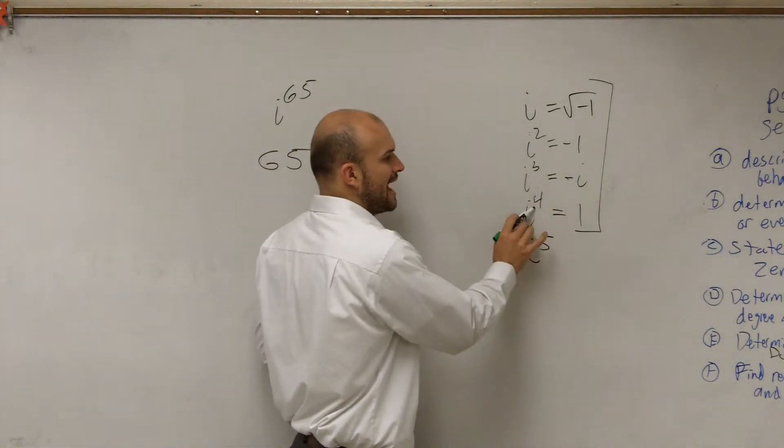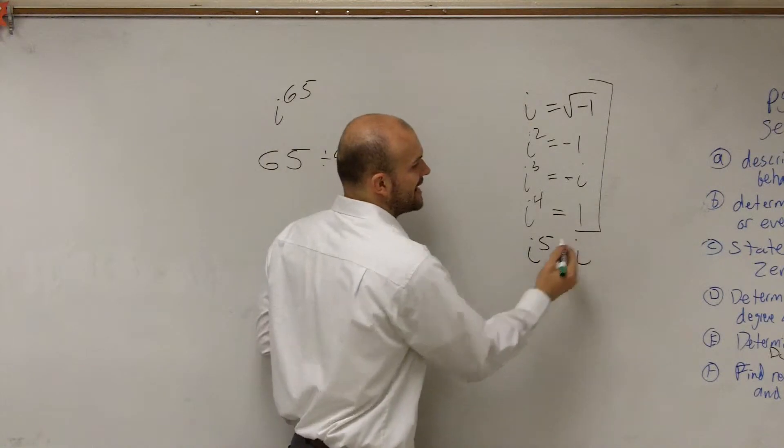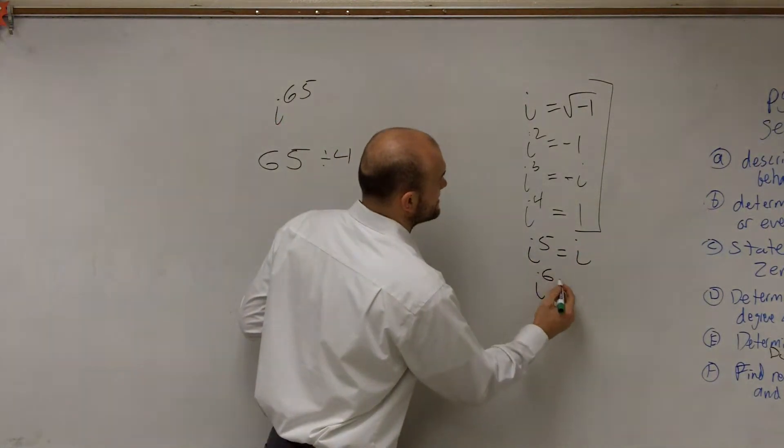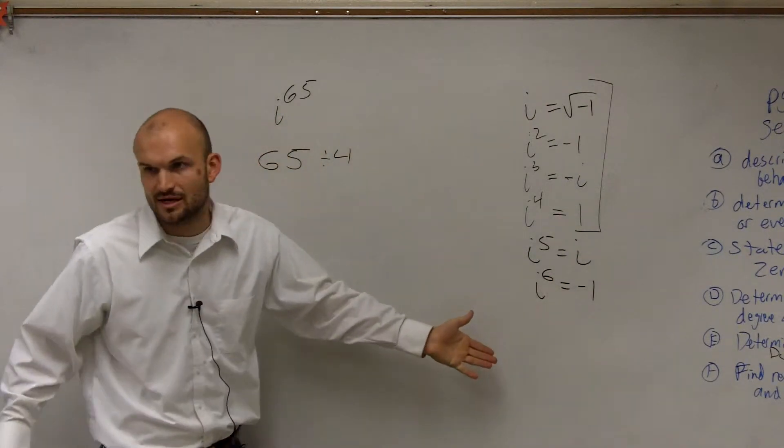Because i to the fifth, if you multiply i on both sides again, you're getting i to the fifth, which is equal to i. And then you could say i to the sixth is equal to negative 1. And it goes back, repeats itself.